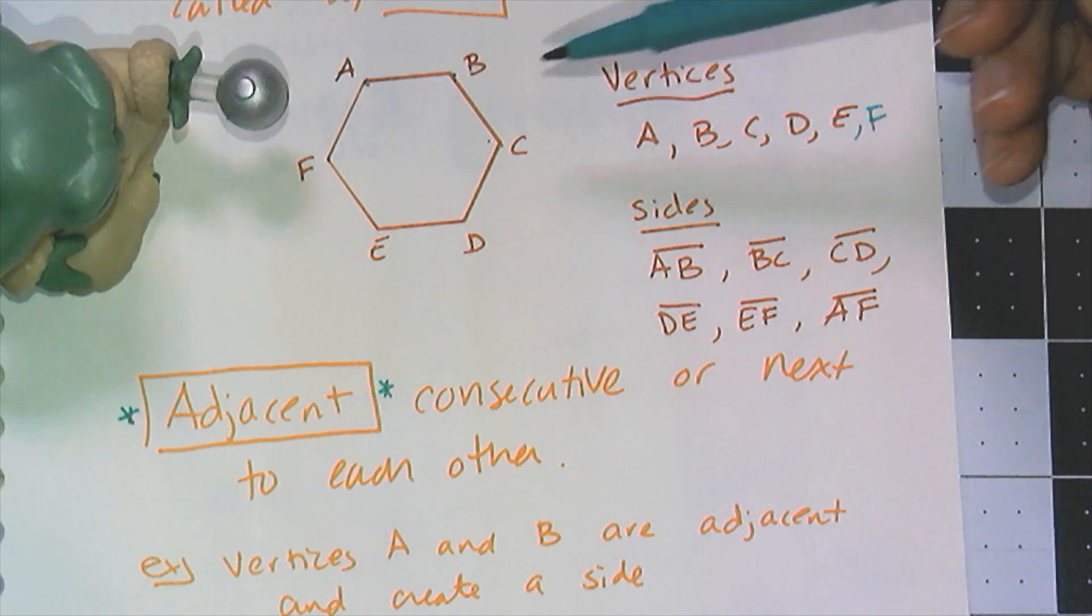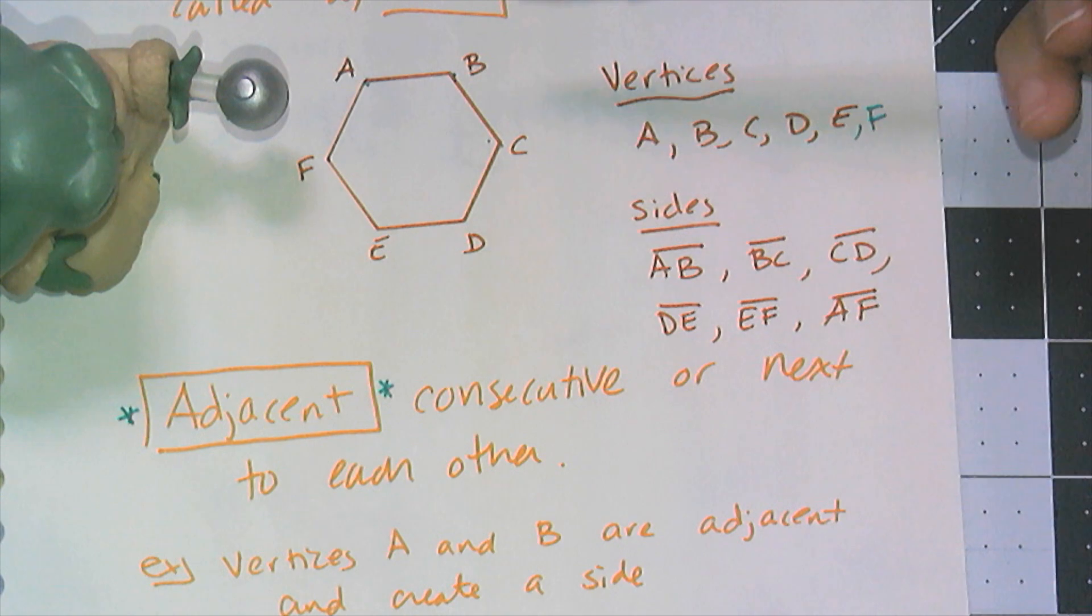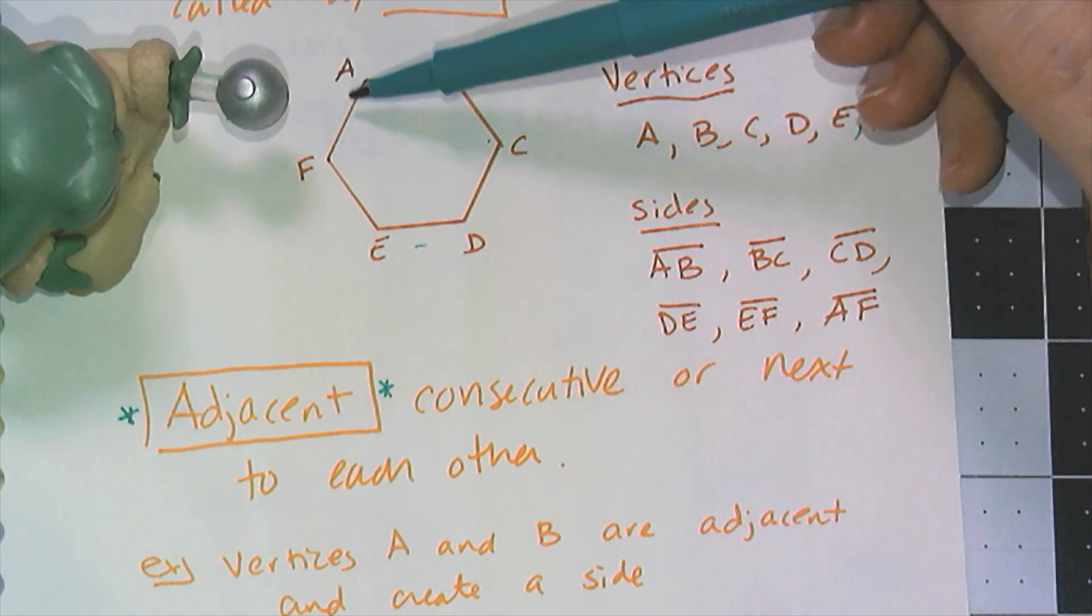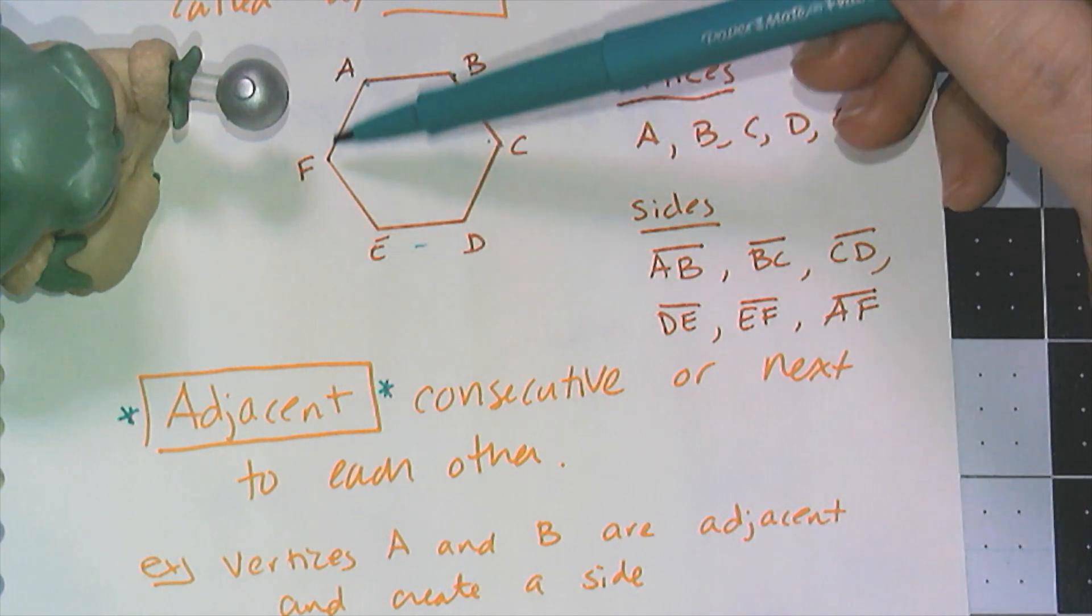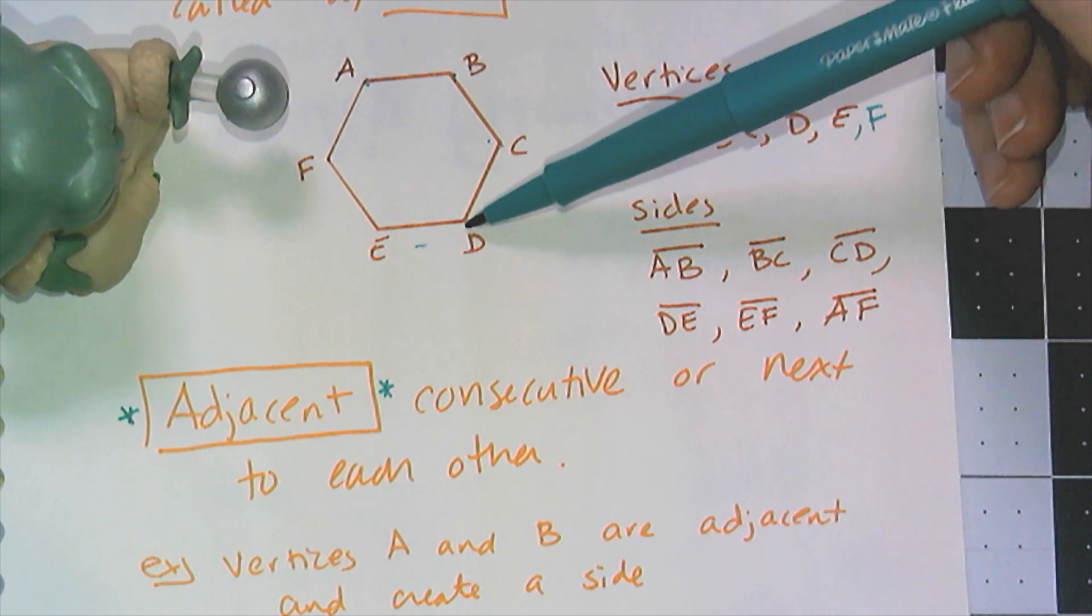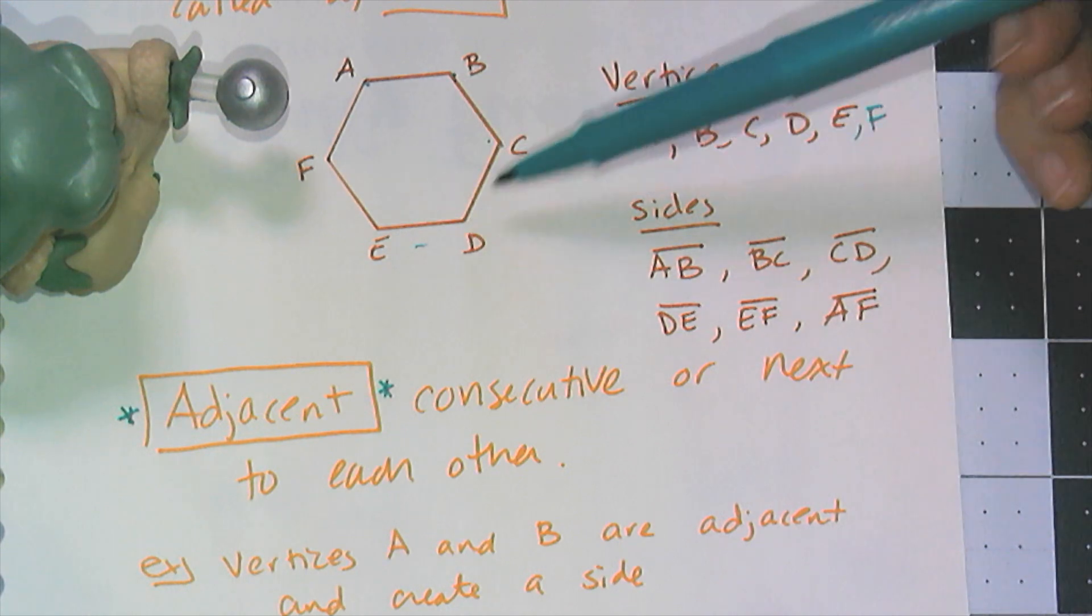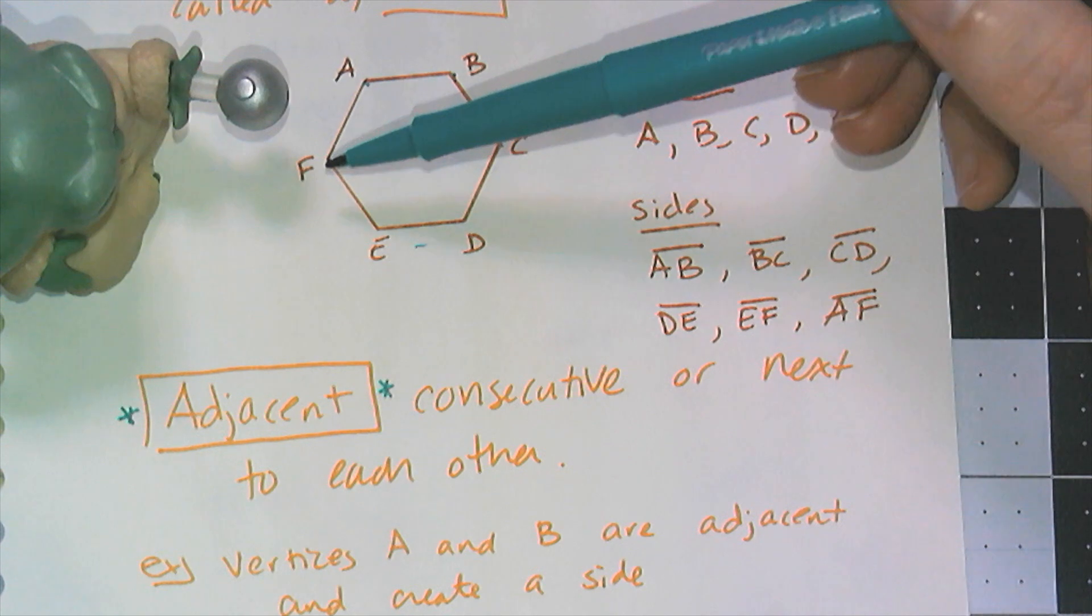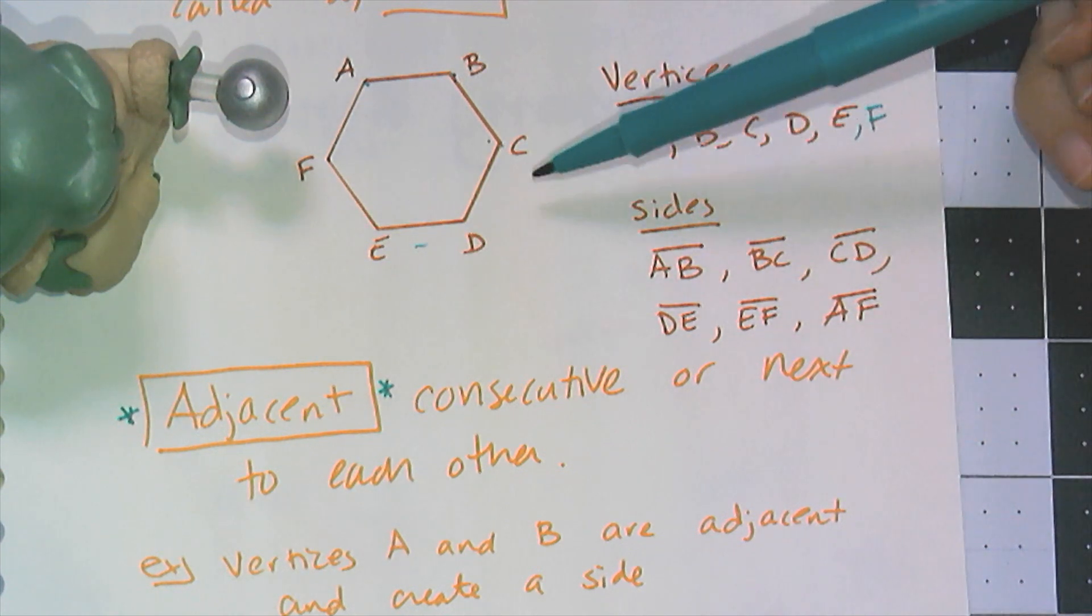Now, briefly on the naming, we would call this hexagon because it has six sides, or you can just call it polygon. You pick a letter to start with and go around full circle in either direction. So I can call this polygon ABCDEF, or I can call it polygon FEDCBA. But the key is that the vertices have to be listed in order which they are adjacent to each other.